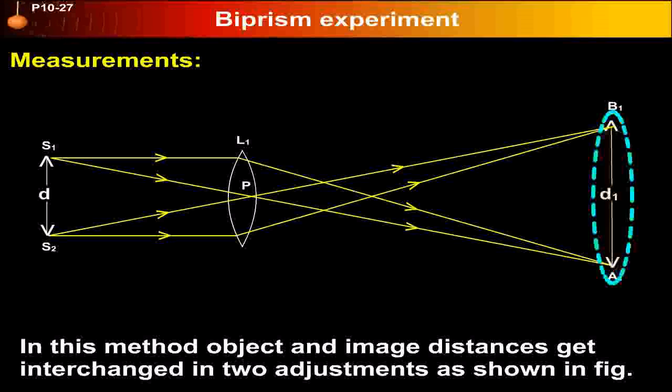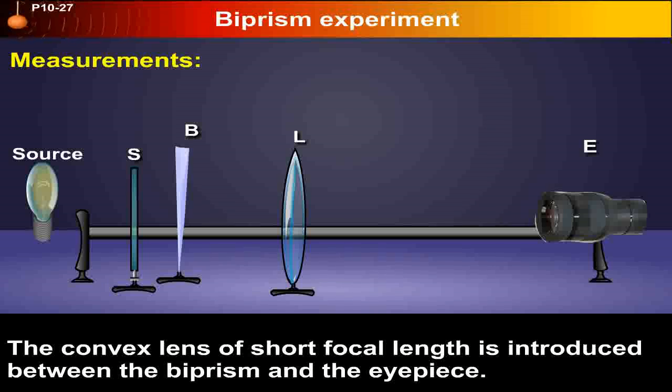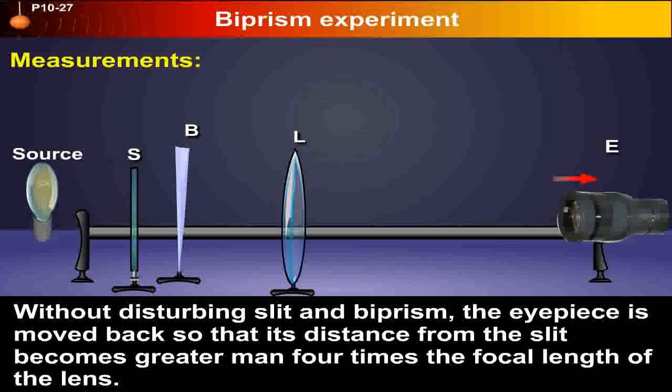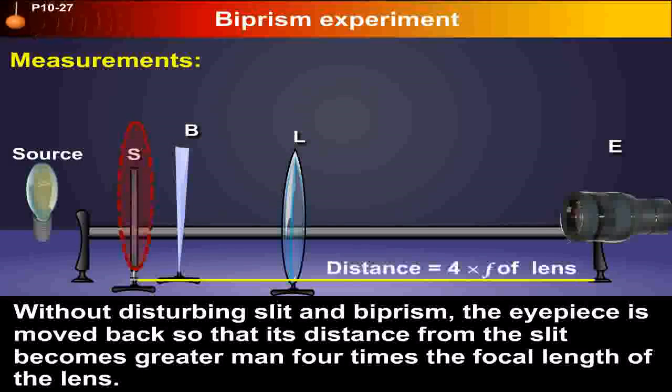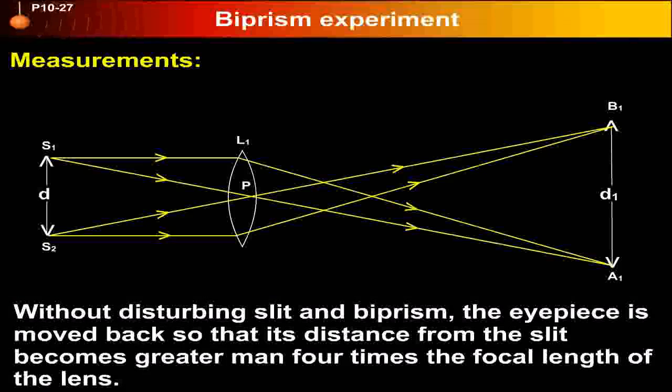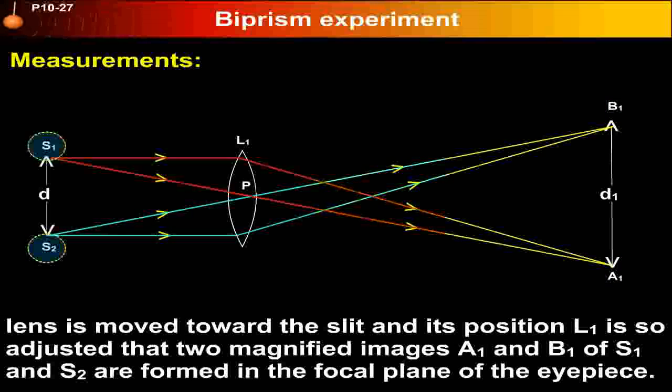In this method, object and image distances get interchanged in two adjustments. A convex lens of short focal length is introduced between the bi-prism and the eyepiece without disturbing the slit and bi-prism. The eyepiece is moved back so that its distance from the slit becomes greater than four times the focal length of the lens. The lens is moved toward the slit and its position L1 is so adjusted that two magnified images A1 and B1 of S1 and S2 are formed in the focal plane of the eyepiece.